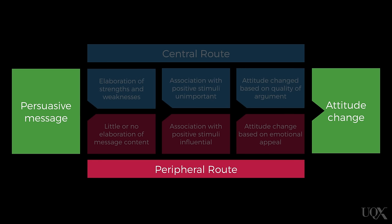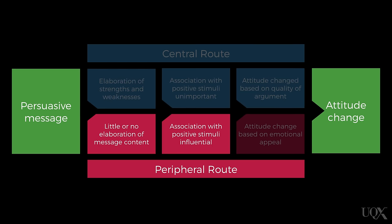For the peripheral route, the strength of the message content is less important. You're more persuaded if the message is associated with other things that are positively evaluated. For example, if you have a positive stereotype about the type of person giving you the message, you'll be more persuaded by the message. This means attitude change is more the result of some type of appeal to your emotion.